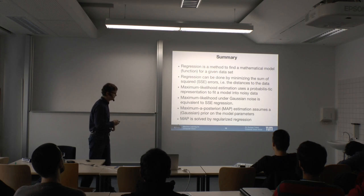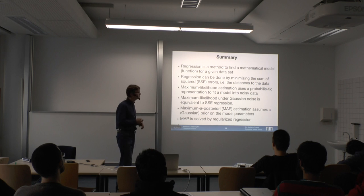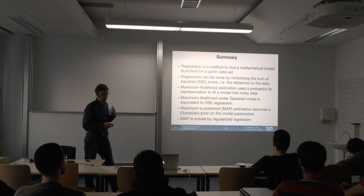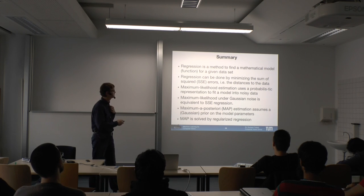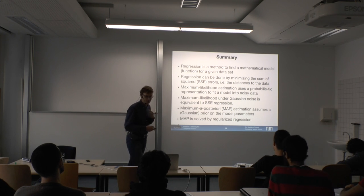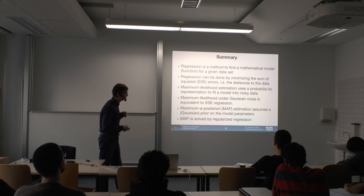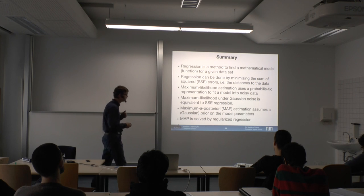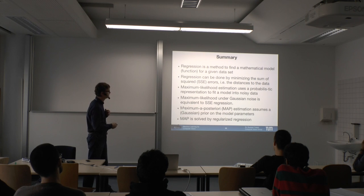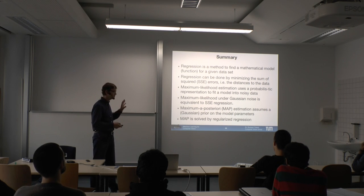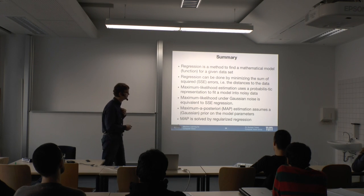To summarize: regression finds a mathematical model for a given data set by minimizing the sum of squared errors — this is maximum likelihood estimation. However, this leads to overfitting, which is why we introduce regularization. Regularization corresponds to MAP estimation — we add a Gaussian prior on the parameters. If both prior and likelihood are Gaussian, everything is in closed form: prior Gaussian times likelihood Gaussian gives a posterior Gaussian, which we can solve analytically.